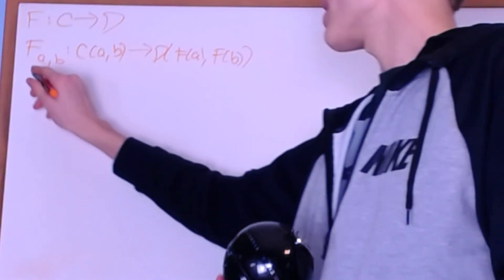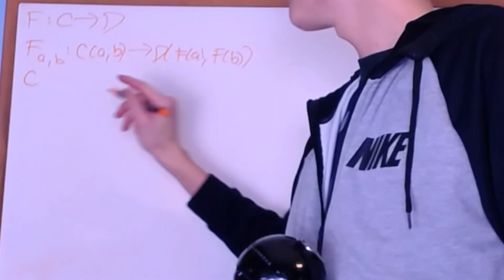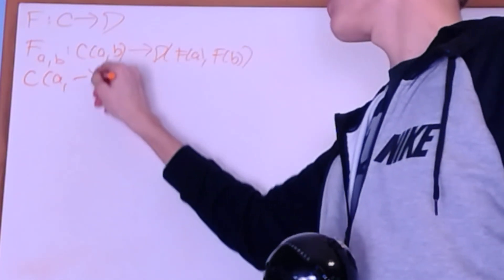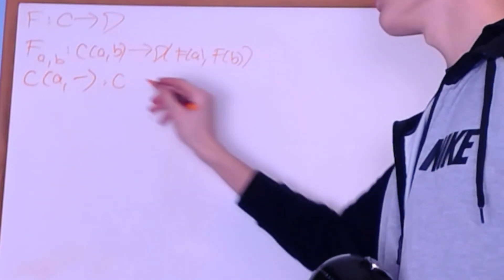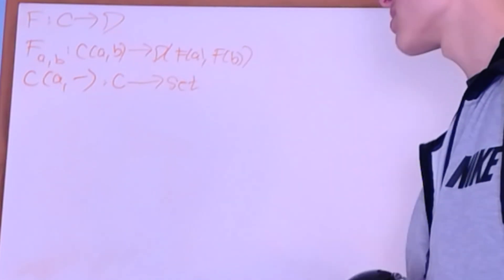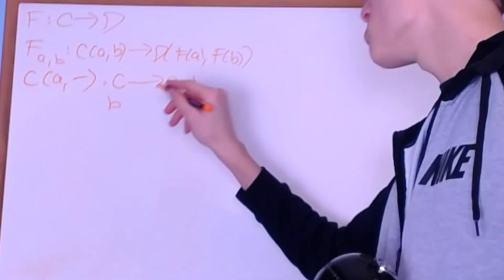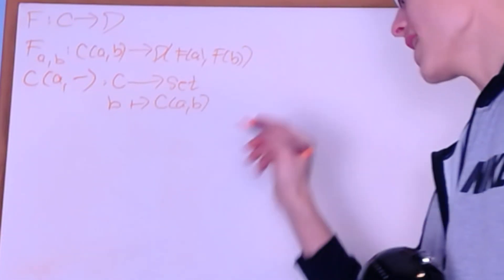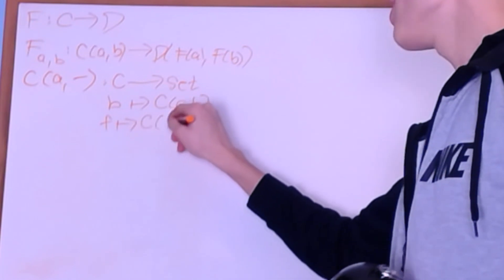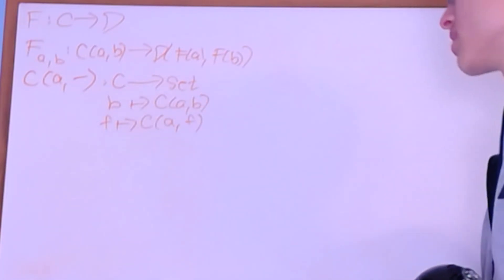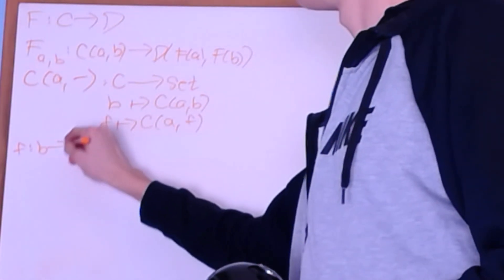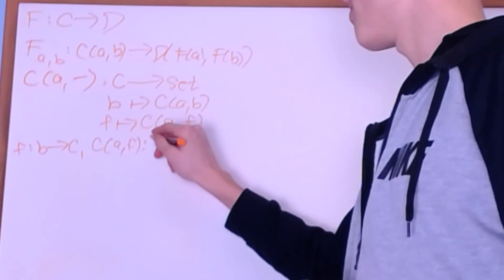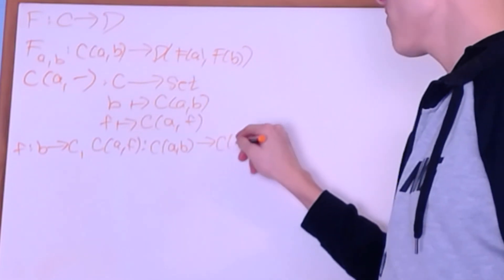An example of a functor I should introduce is the Hom functor. If I have the Hom-set with A and an empty slot, this is going to be a functor from a locally small category into the category of sets. What it'll do is send an object B of C to the Hom-set from A to B, and it'll send an arrow f to the new function C(A, f), where if f is from B to C, this creates a new arrow C(A, f) from C(A, B) into C(A, C).